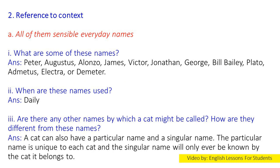2. Answer the following with reference to context. A. 'All of them sensible everyday names.' 1. What are some of these names? Answer: Peter, Augustus, Alonzo, James, Victor, Jonathan, George, Bill Bailey, Plato, Admetus, Electra or Demeter. 2. When are these names used? Answer: These names are used daily.